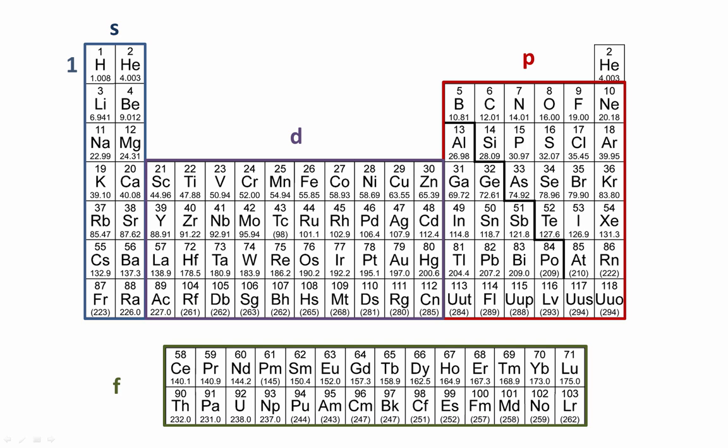The s subshell starts when n equals 1. The p subshell starts when n equals 2. The d subshell starts when n equals 3, and the f subshell starts when n equals 4. We can continue to fill in the n values for each row and block in the periodic table.